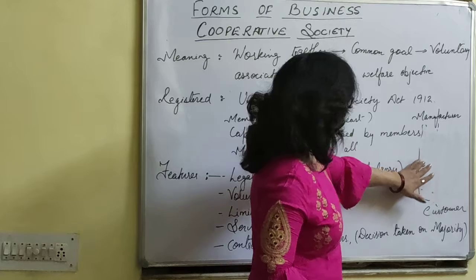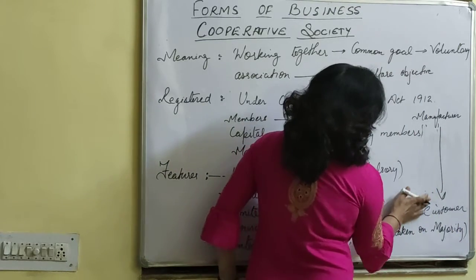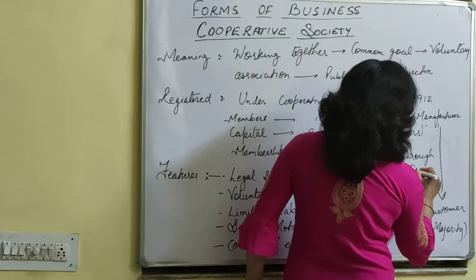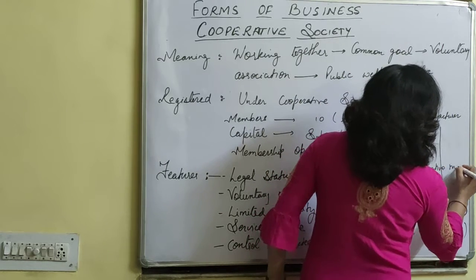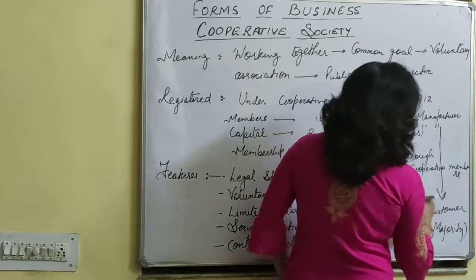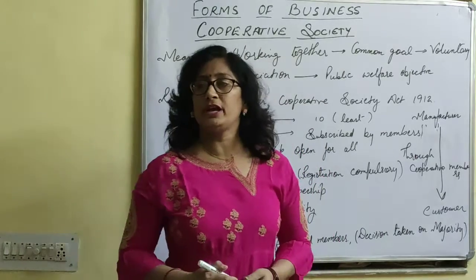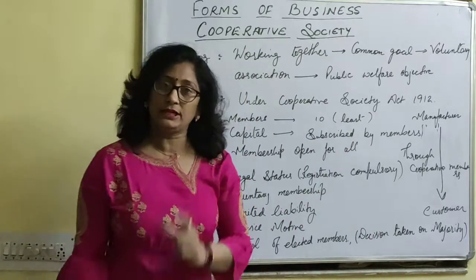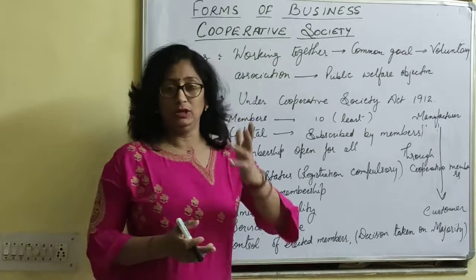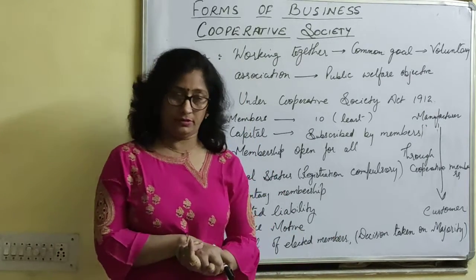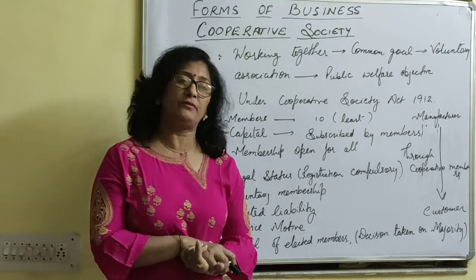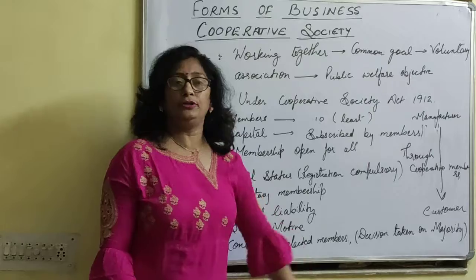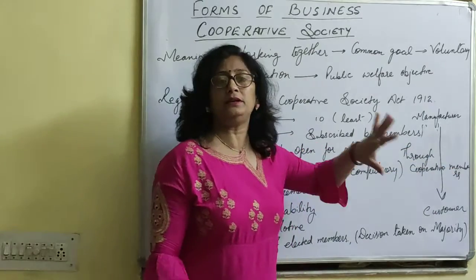But if we remove all these intermediaries and deliver the product directly from the manufacturer to the customer through cooperative members, then the chain is shortened. The commissions in between are reduced, and as a result the product becomes cheaper. This is how cooperative societies work — eliminating unnecessary middlemen to provide goods at lower cost to consumers.